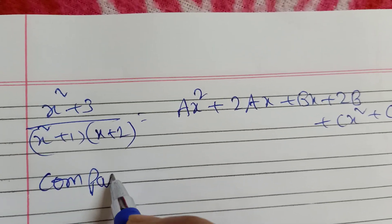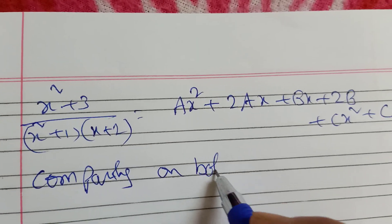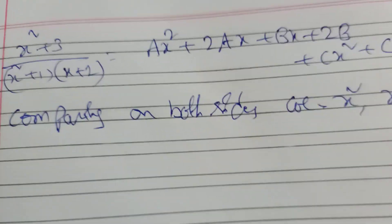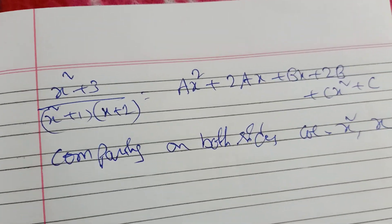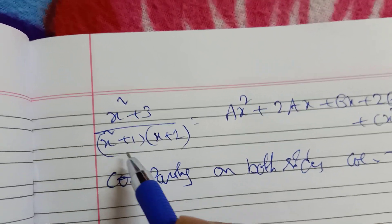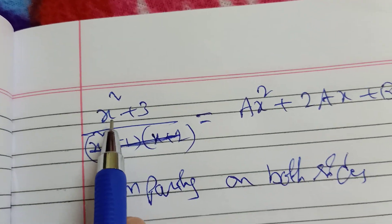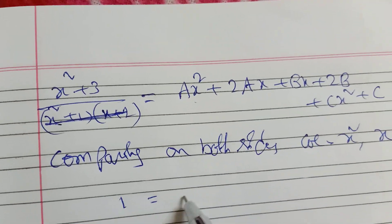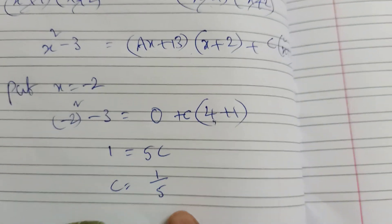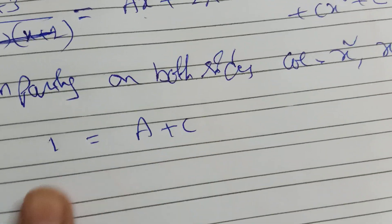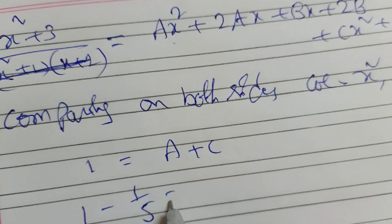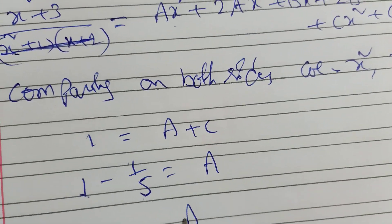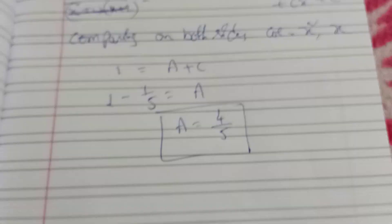Comparing on both sides for x squared coefficients: 1 equals A plus C. Since C equals 1 by 5, we get A equals 1 minus 1 by 5 equals 4 by 5.